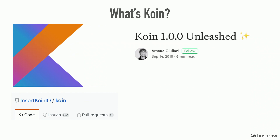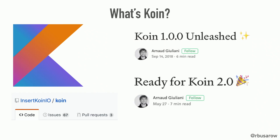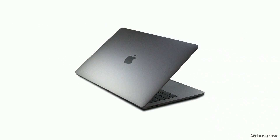1.0 came out a little over a year ago, written by Arnaud Giuiani. He's an Android developer and decided that there's something better we can do with just Kotlin, moving away from annotation processing. 2.0 came out in May, which is what triggered, I think, a lot of the renewed talk about it.